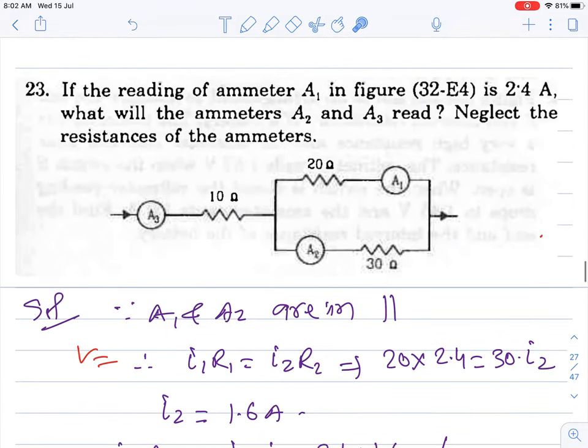Moving to question number 23: If the reading of ammeter A₁ is 2.4 amperes, what will ammeters A₂ and A₃ read? Neglect the resistance of the ammeter.